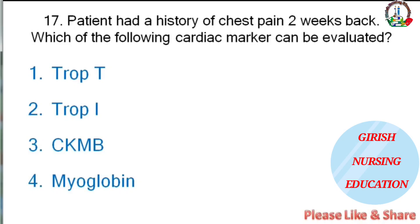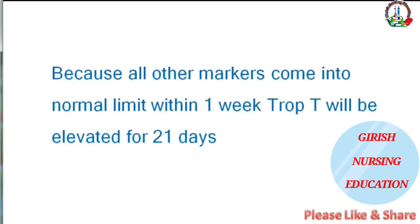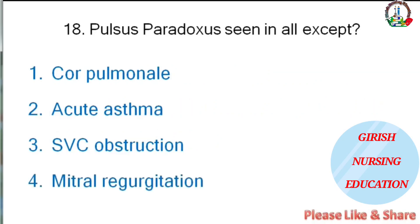A patient had a history of chest pain two weeks back. Which cardiac marker can be evaluated — Troponin-T, Troponin-I, CKMB, or myoglobin? The correct answer is Troponin-T. All other markers return to normal limits within one week; Troponin-T remains elevated for 21 days.